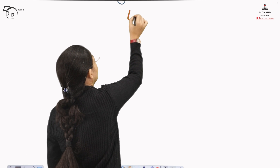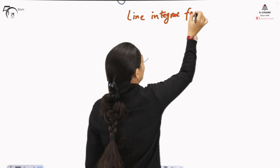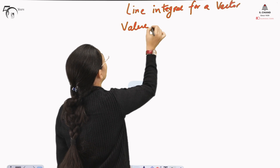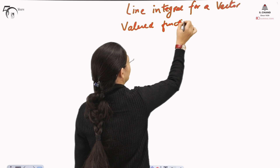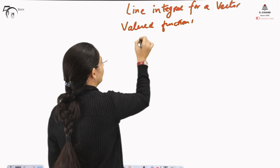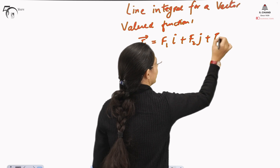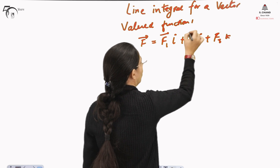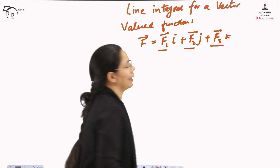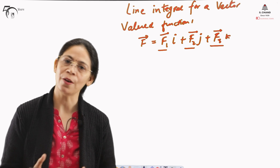For a line integral of a vector valued function, since we are taking a vector valued function, let us say that F is given as F1·i plus F2·j plus F3·k, where F1, F2, and F3 are the components of F in the i, j, and k directions. F1, F2, and F3 are functions — they may be functions of X, Y, and Z.